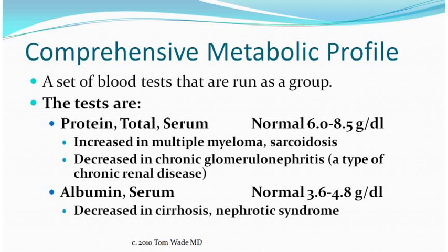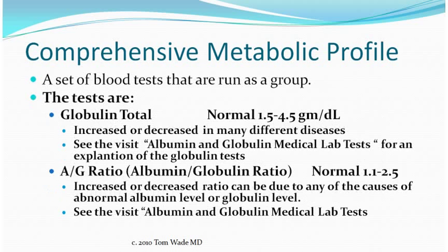The total serum protein can be increased in multiple myeloma and sarcoidosis, and it can be decreased in chronic glomerulonephritis, which is a type of chronic renal disease. The serum albumin can be decreased in liver disease, cirrhosis, and in nephrotic syndrome. The total globulin and the albumin-to-globulin ratio can be increased or decreased due to a number of causes, and there's a special visit on albumin-globulin medical lab tests coming up that will go over this in some detail.